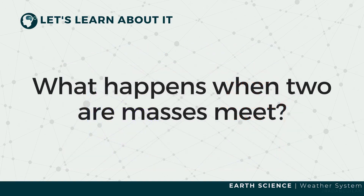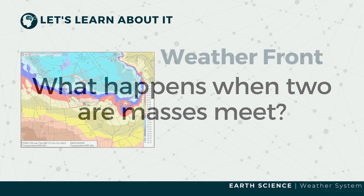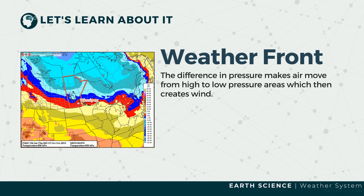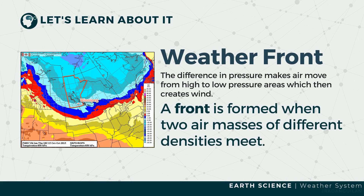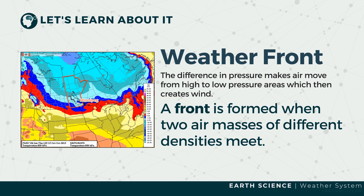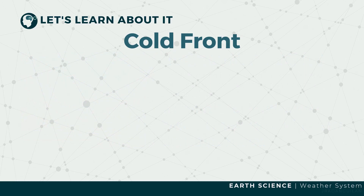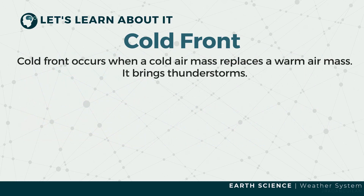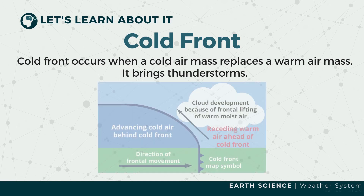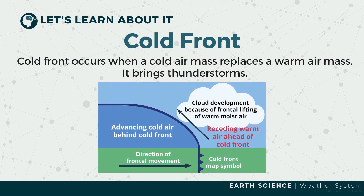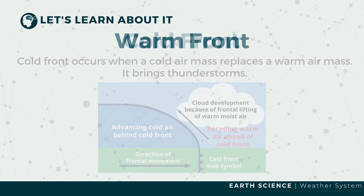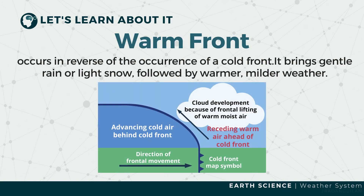When two air masses meet, a front is formed. Fronts bring clouds and precipitation over an area with accompanying temperature, moisture, pressure, and wind changes. A cold front occurs when a cold air mass replaces a warm air mass. The warm front occurs in reverse of the occurrence of the cold front.